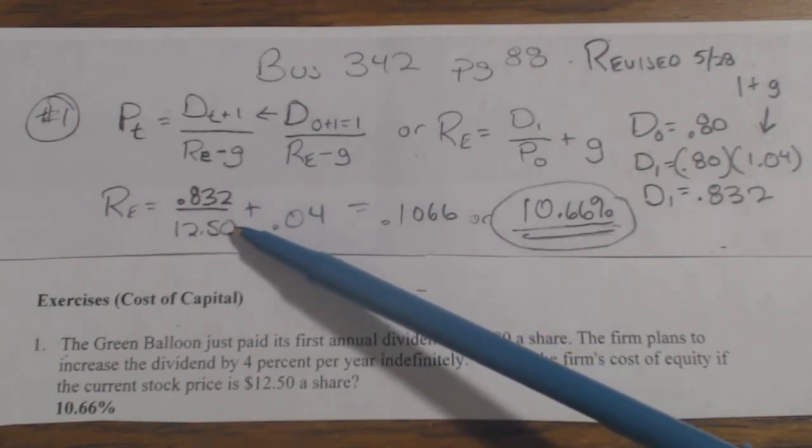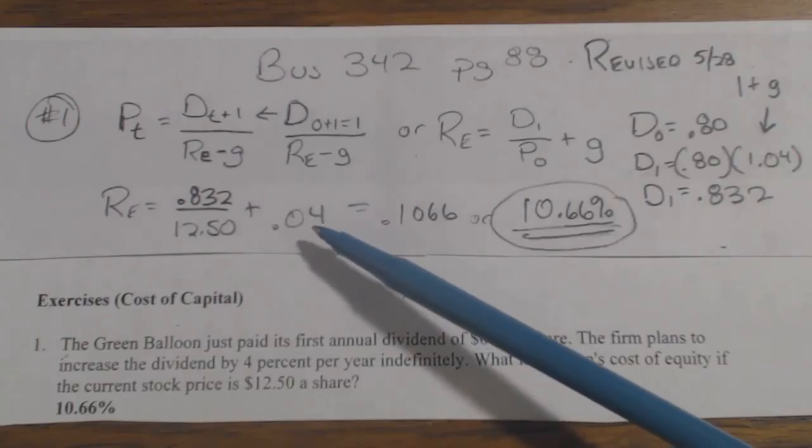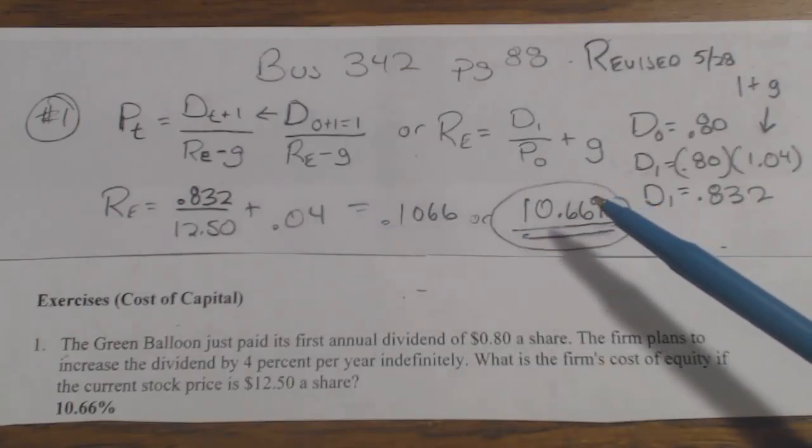Since this is going to come out as a decimal, you want to put the growth rate as a decimal. You add them together and get 10.66%.